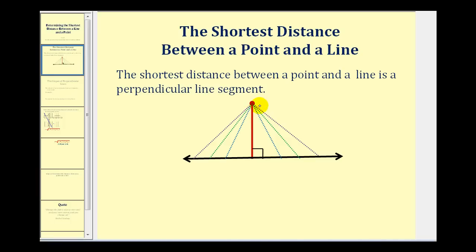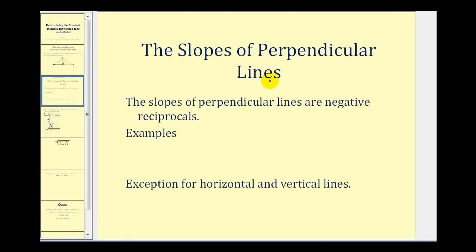The key to solving a problem like this is determining the endpoint of the perpendicular segment. Once we find that point, we'll use the distance formula to determine the length of this segment. One thing we're going to review first is the slopes of perpendicular lines — remember, the slopes of perpendicular lines are negative reciprocals of one another.